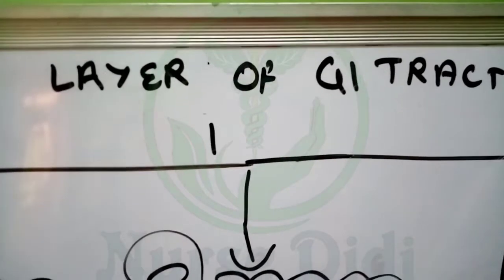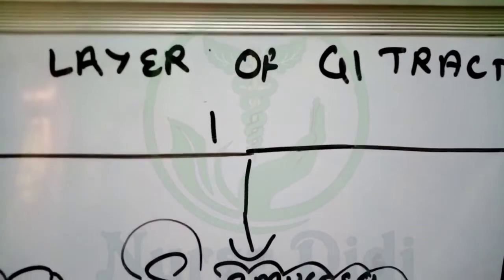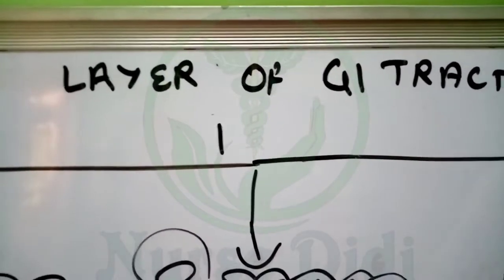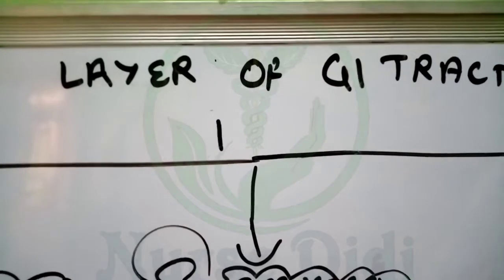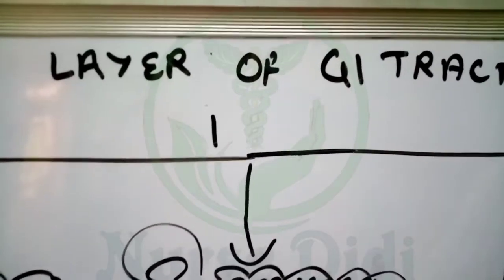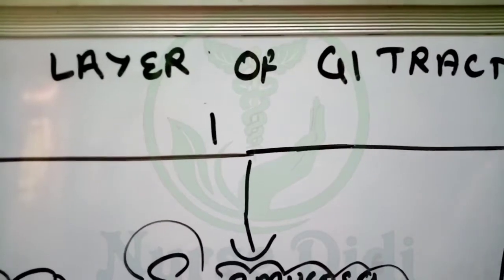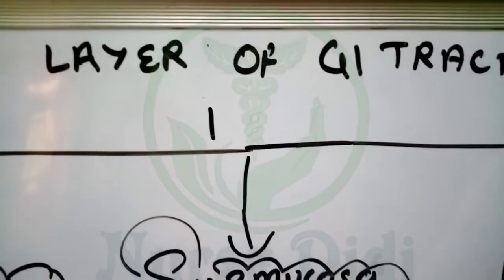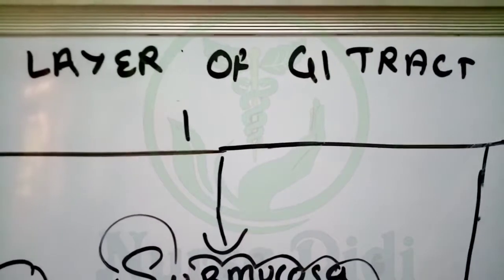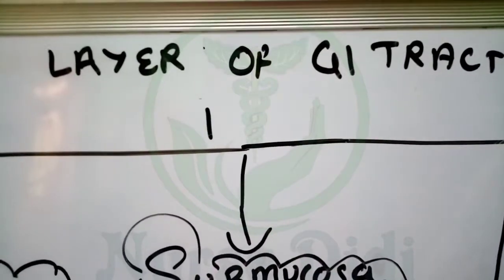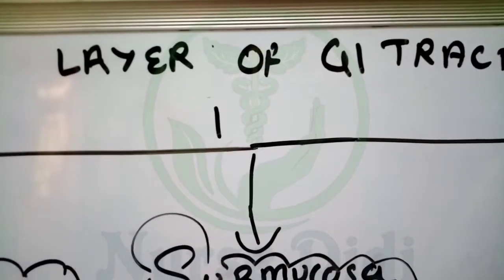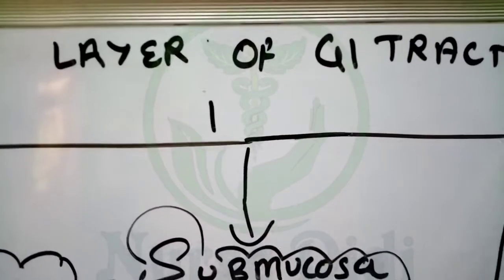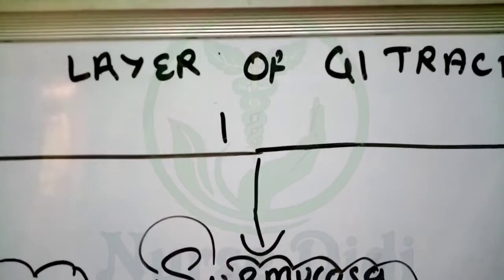Hello students, welcome to Nursing Mila. Today we are going to take our digestive system next class. We are going to study the next layer, like we have studied in previous classes - the layers of the GIT tract, i.e., the alimentary canal. There are so many layers.